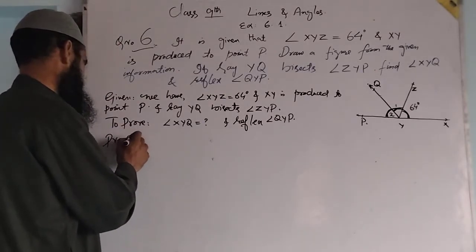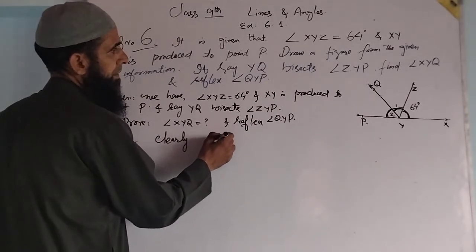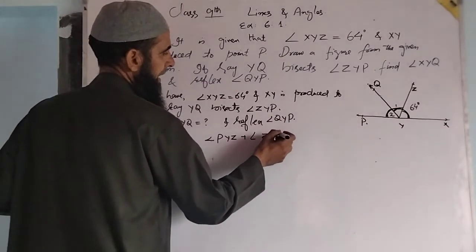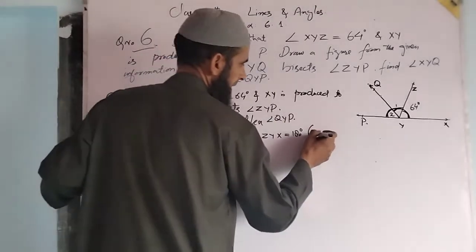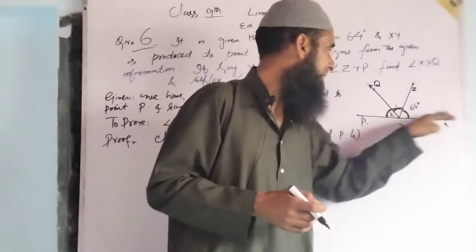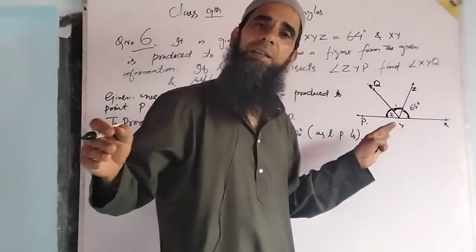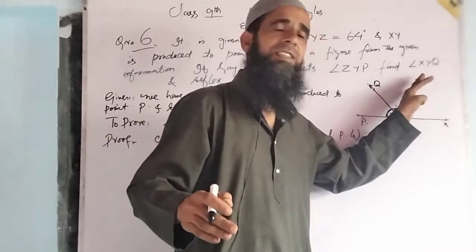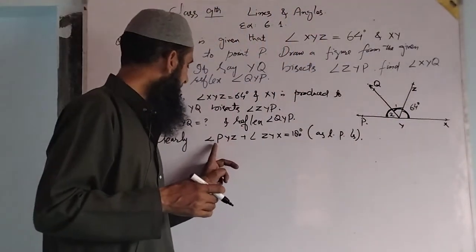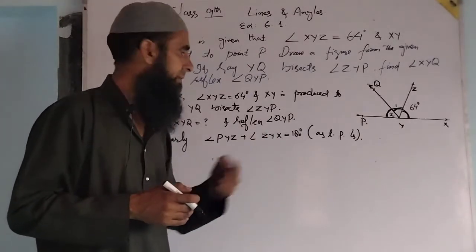Now, clearly angle PYZ plus angle ZYX equals 180 degrees — as a linear pair. PX is a line because XY is produced to P. YZ is a ray, so we get a pair of linear pair angles. Therefore: angle PYZ plus angle ZYX equals 180 degrees.